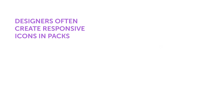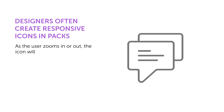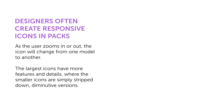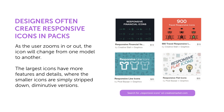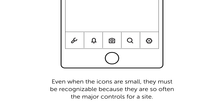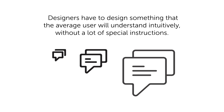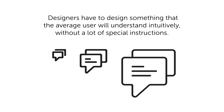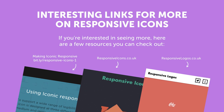So how do we design responsive icons? Designers often create responsive icons in packs. As the user zooms in or out, the icon will change from one model to another. The largest icons have more features and details, where the smaller icons are simply stripped down, diminutive versions. Even when the icons are small, like in smartphones, they must be recognizable because they're so often the major controls for a site. Designers have to design something that the average user will understand intuitively, without a lot of special instructions.